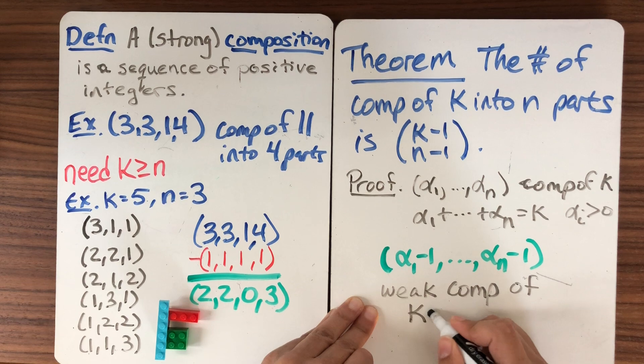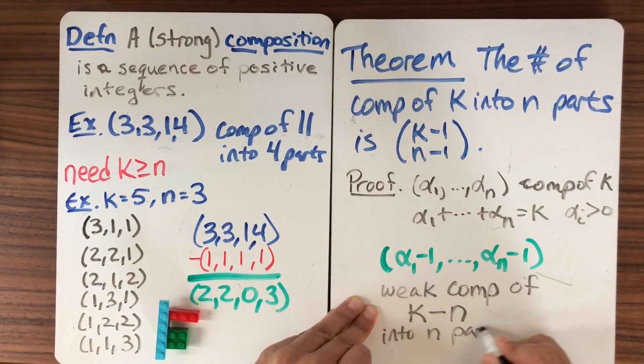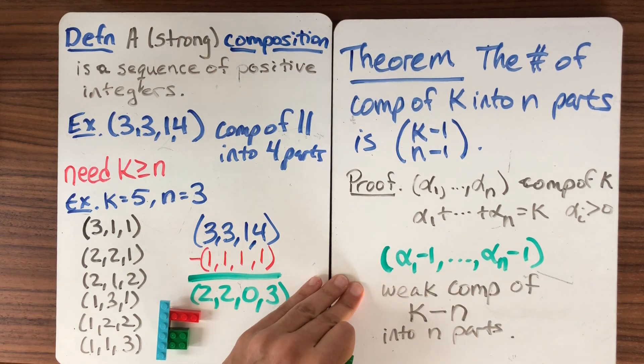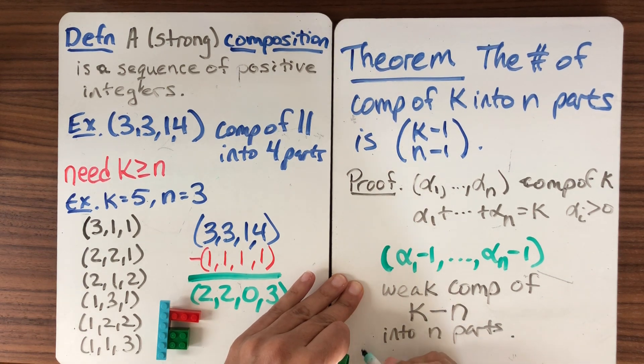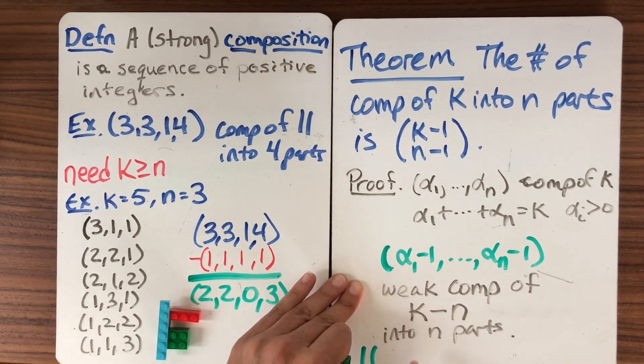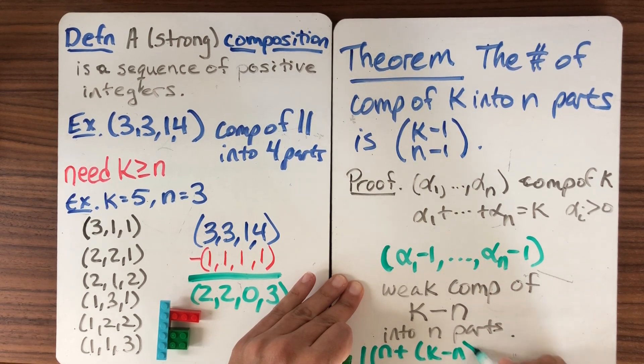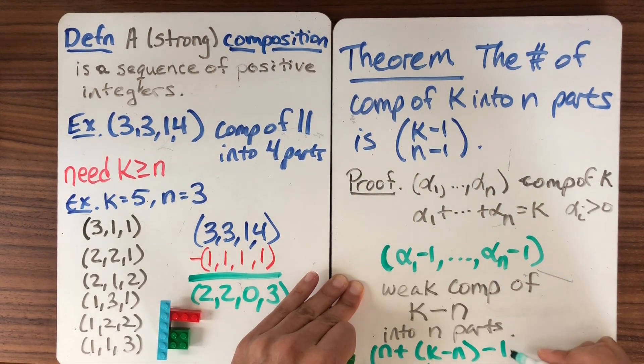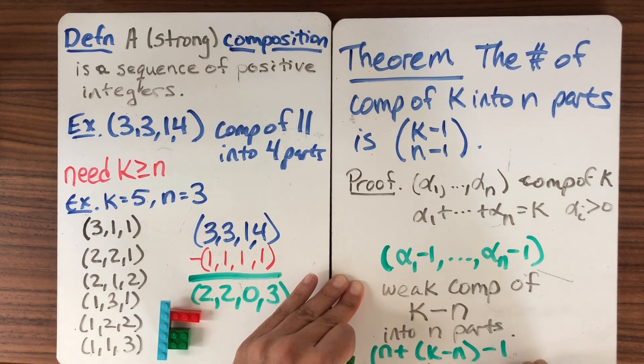Well, I've subtracted one in each position. How many positions did I have? n positions. So it's a weak composition of k - n into n parts. So remember the way that we counted the weak compositions, right? The theorem for that is that it's the n is the same plus, now we're replacing k with k - n, minus one, choose k, which again, the k has changed. This is k - n.